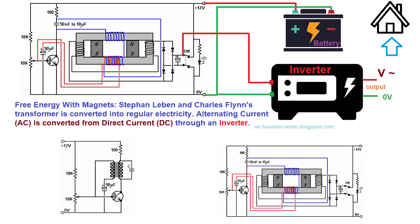Stefan Levin's journey into free energy begins with the exploration of Alexander Meissner's 1913 Circuit, a concept that exploits back EMF to generate electrical oscillation resonance. A crucial element of this circuit is the C-terminal of the transistor, where the main coil of the transformer is connected. This establishes the foundation for the subsequent innovations brought forth by Levin and Flynn.